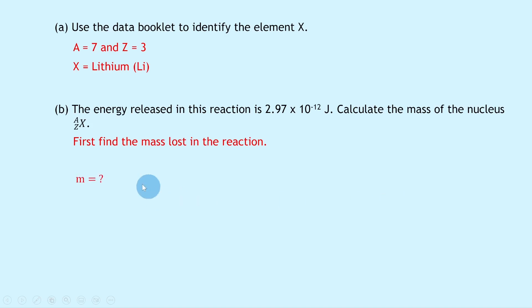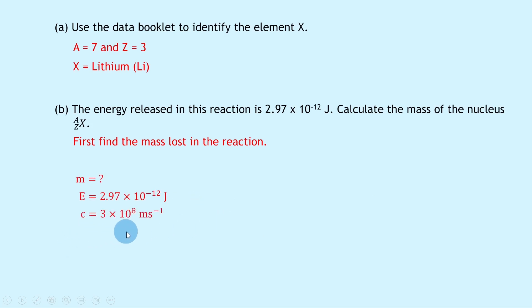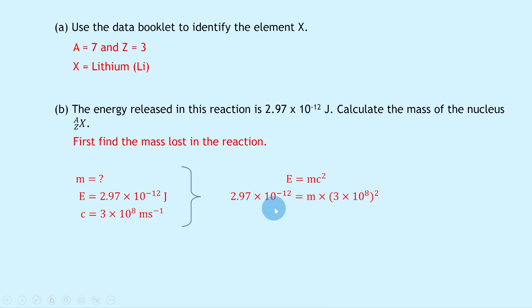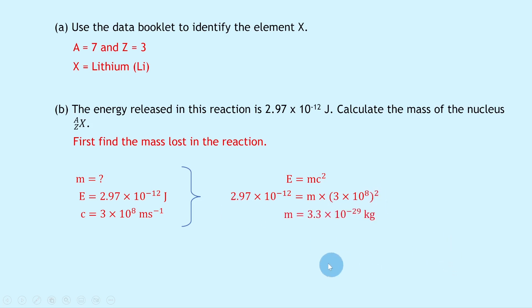We're trying to find the mass lost m, we know the energy released is 2.97×10⁻¹² joules and the speed of light is 3×10⁸ m/s. Using E = mc² and substituting gives 2.97×10⁻¹² = m × (3×10⁸)². Dividing both sides by (3×10⁸)² gives m = 3.3×10⁻²⁹ kilograms — that's the mass lost in the reaction.